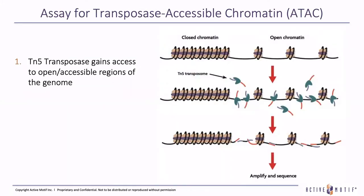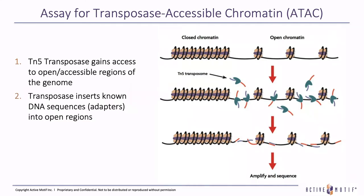That's what ATAC-seq stands for — the Assay for Transposase Accessible Chromatin. The first step of ATAC-seq is that we add transposase to the genomic DNA and it gains access to all open and accessible regions of the genome. Transposase then inserts known DNA sequences — these are the adapters — into the open regions. These libraries that are created are then amplified and sequenced.